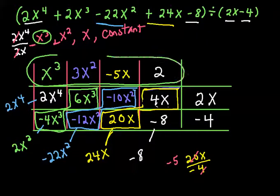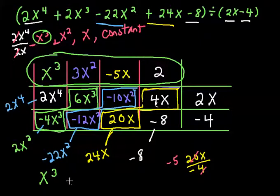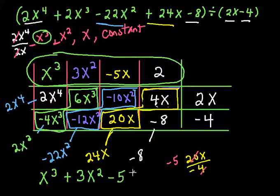So I'm going to go ahead and write the answer down at the bottom. It's going to be x cubed plus 3x squared minus 5x plus 2.